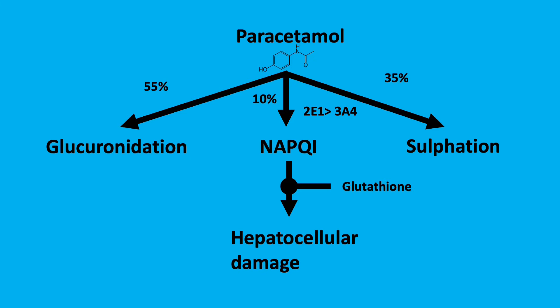NAPQI can cause injury to hepatocytes in two ways. Firstly, by binding to proteins in hepatocytes, leading to injury to the cellular membrane and mitochondrial dysfunction. Secondly, the reduced levels of glutathione make hepatocytes more susceptible to reactive oxygen species-induced injury.